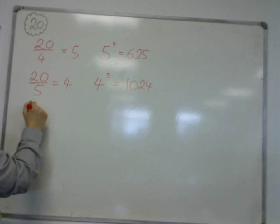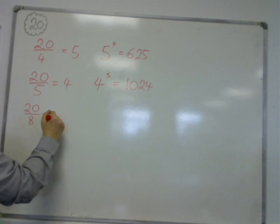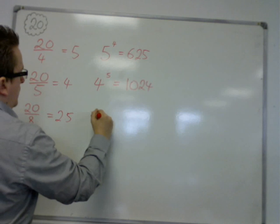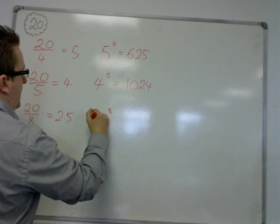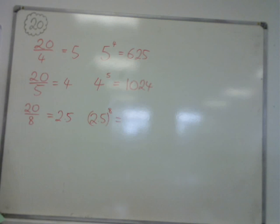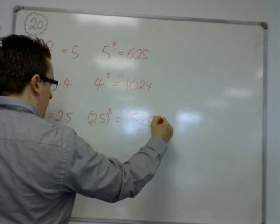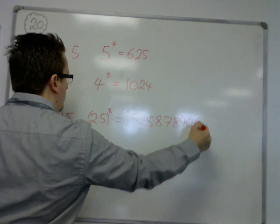Let's say we divide it by 8. 20 divided by 8 is 2.5. 2.5 to the power of 8 is approximately 1525.878906.